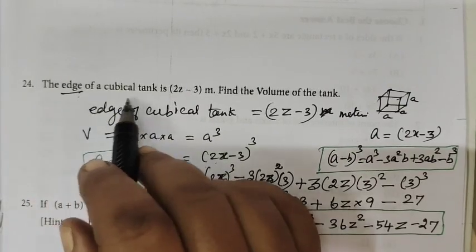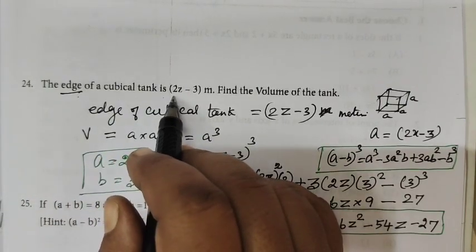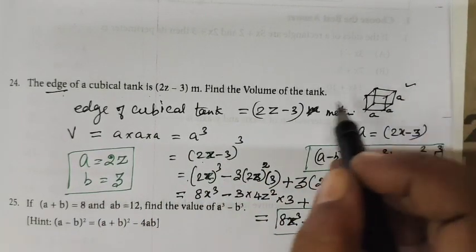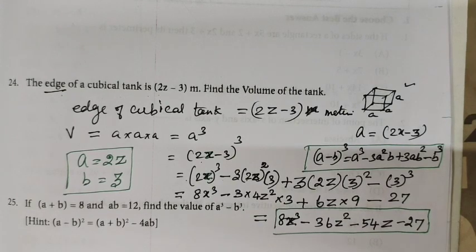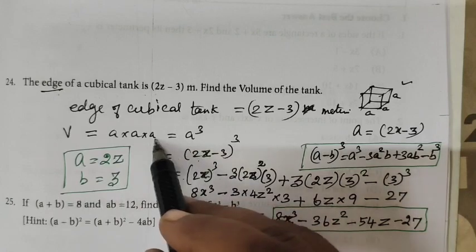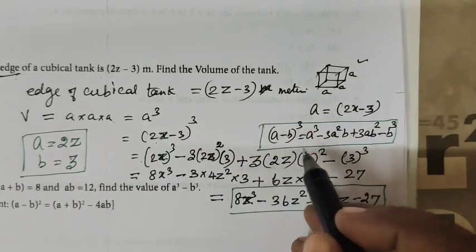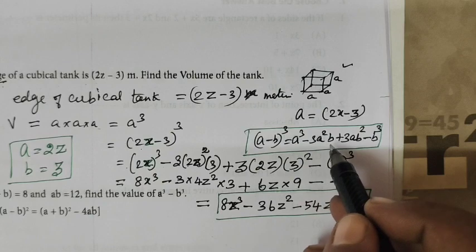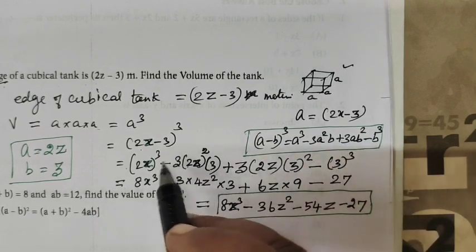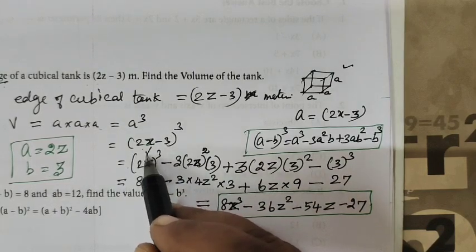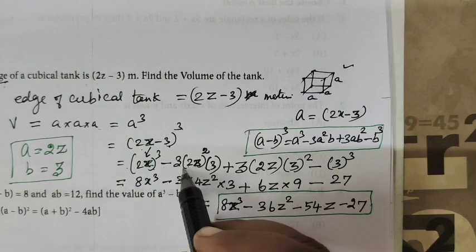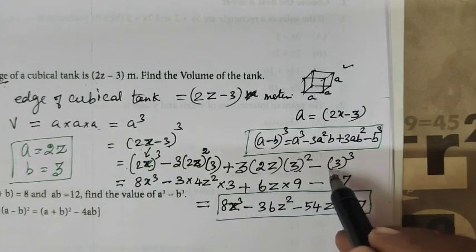Now Question number 24: the edge of the cubical tank. The volume of a cube is side × side × side. So the value is (2e − 3) whole cube. We use the formula (A − B)³ = A³ − 3A²B + 3AB² − B³. In this formula, the addressing element is 3A with B.